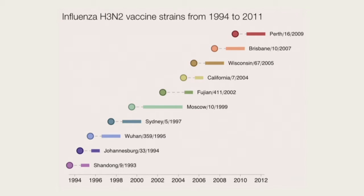If we look just over the last, since 1994 to today, we see that the WHO has constantly recommended new strains to put into the yearly formulation, the flu vaccine.